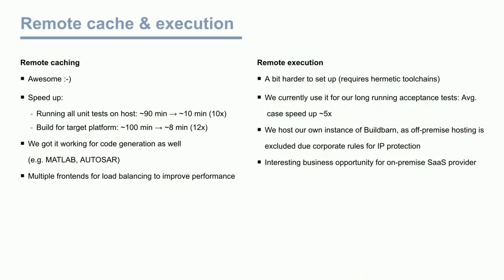So how is Bazel working out for us now? Actually, quite well. For execution times of unit tests, we achieved a 10x speed improvement using remote caching. For the build of the final target — the hardware put into the car — we're able to speed it up by around 12 times. To build for that target you need special tools like code generators or the operating system running on the ECU — all of this we integrated into Bazel so those steps are now Bazel actions and can be cached. MATLAB code generation can take forever, so this sped up not just the CI system but also local development.